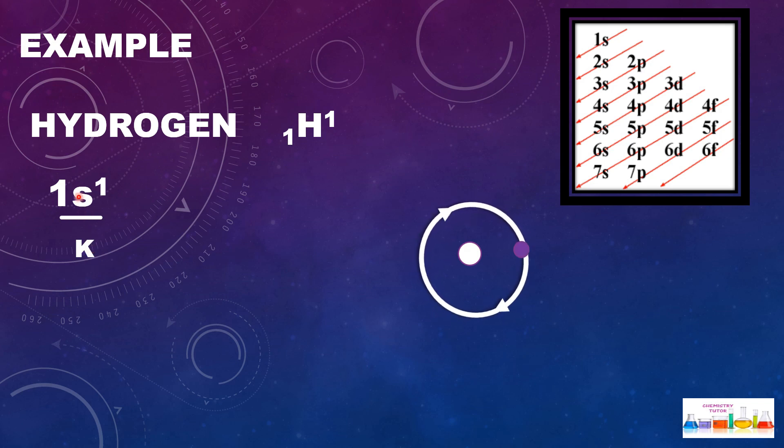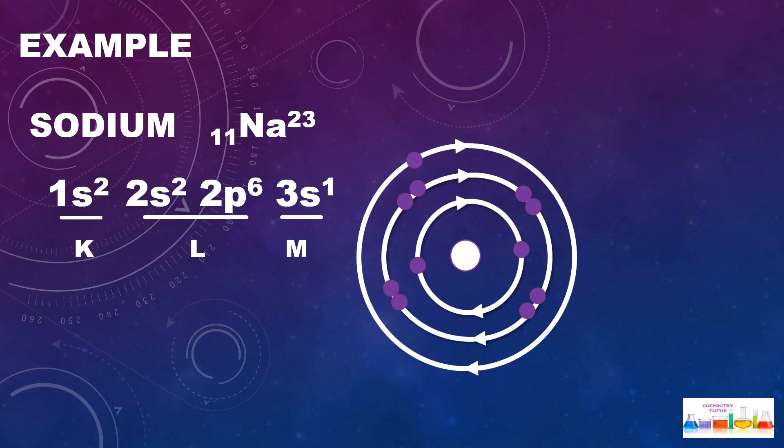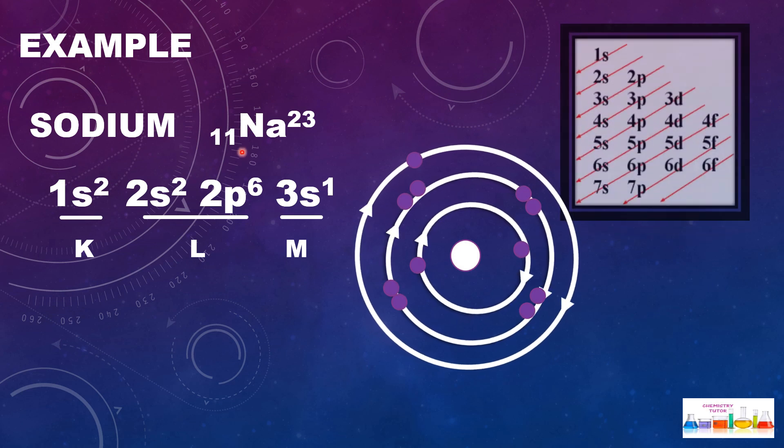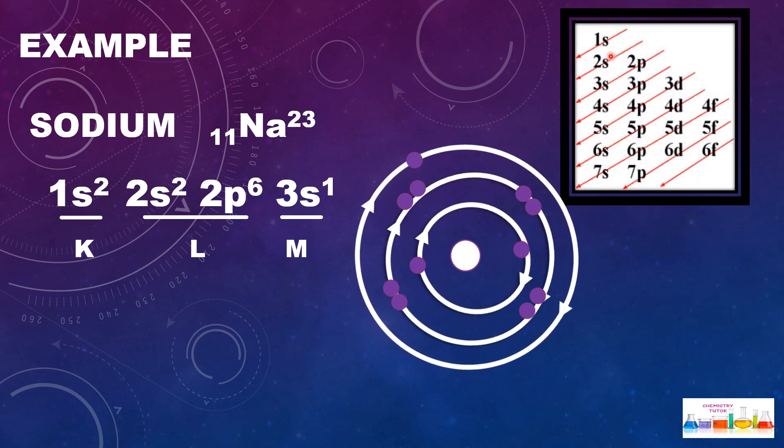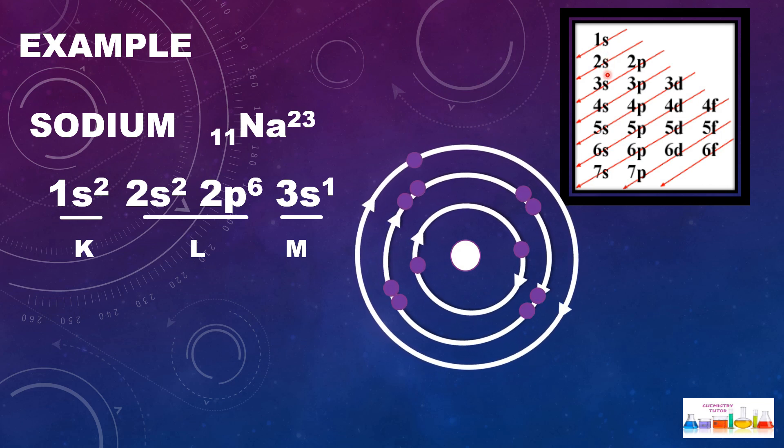But what is this 1s? This is actually first shell K shell, and s is sub-shell. It means that shell consists of sub-shell s. Let's take the example of sodium with atomic number 11.